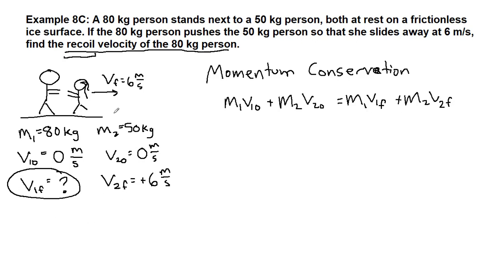Because we've made this nice list of all of the labeled given information, we can just use that. 80 times 0 plus 50 times 0 equals 80 times our unknown V1 final plus 50 times positive 6.